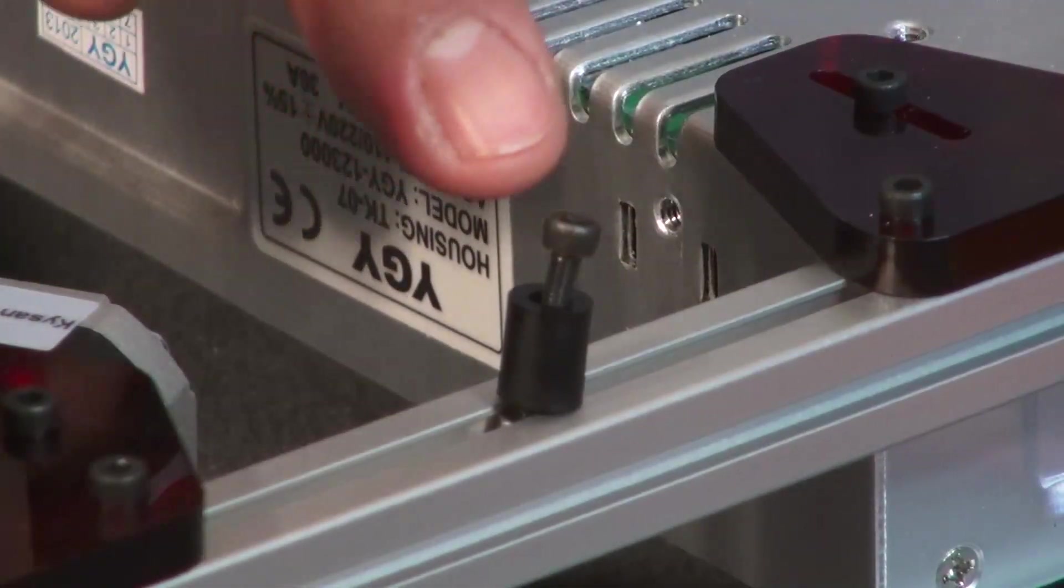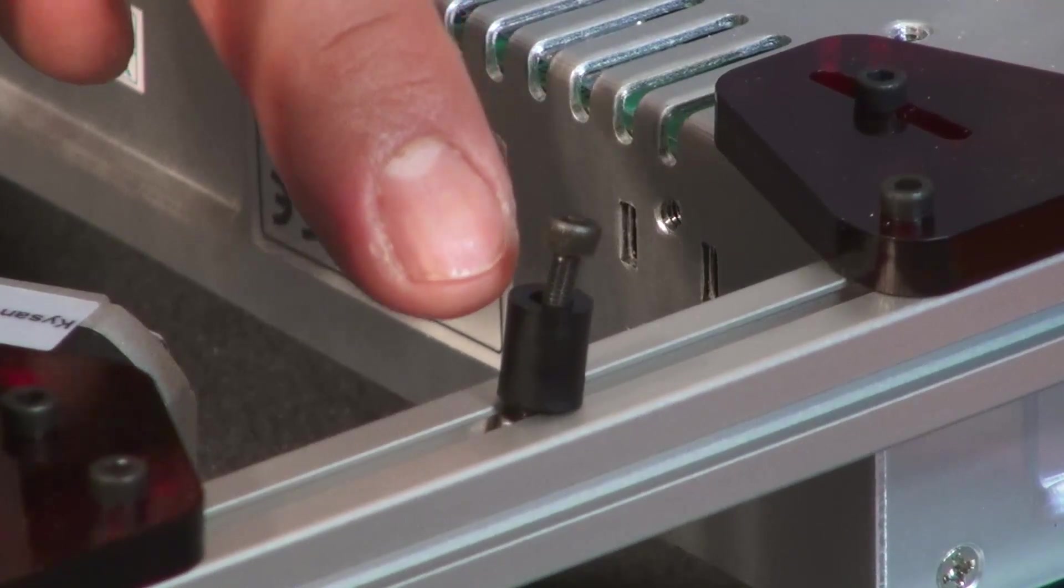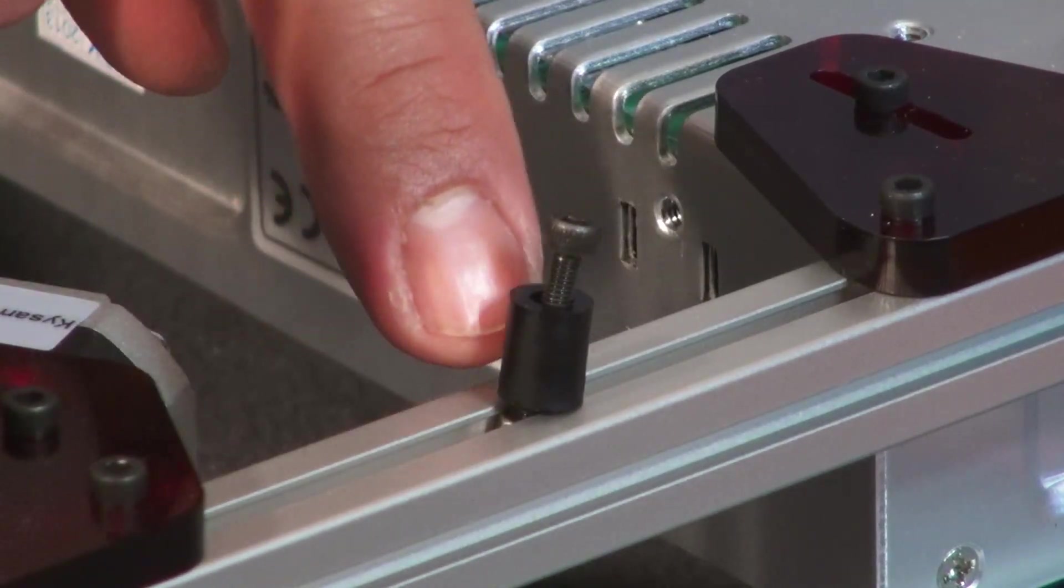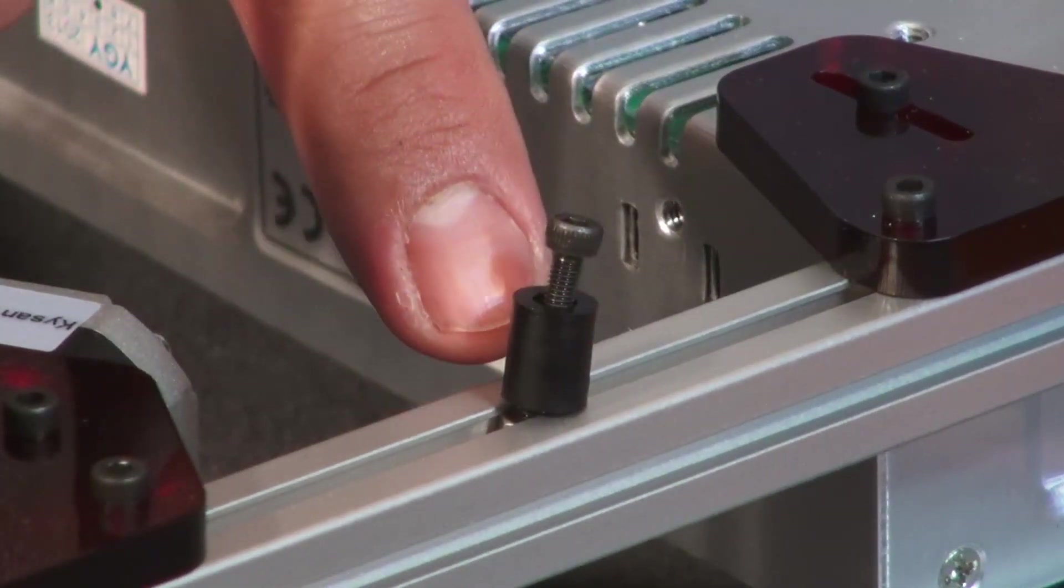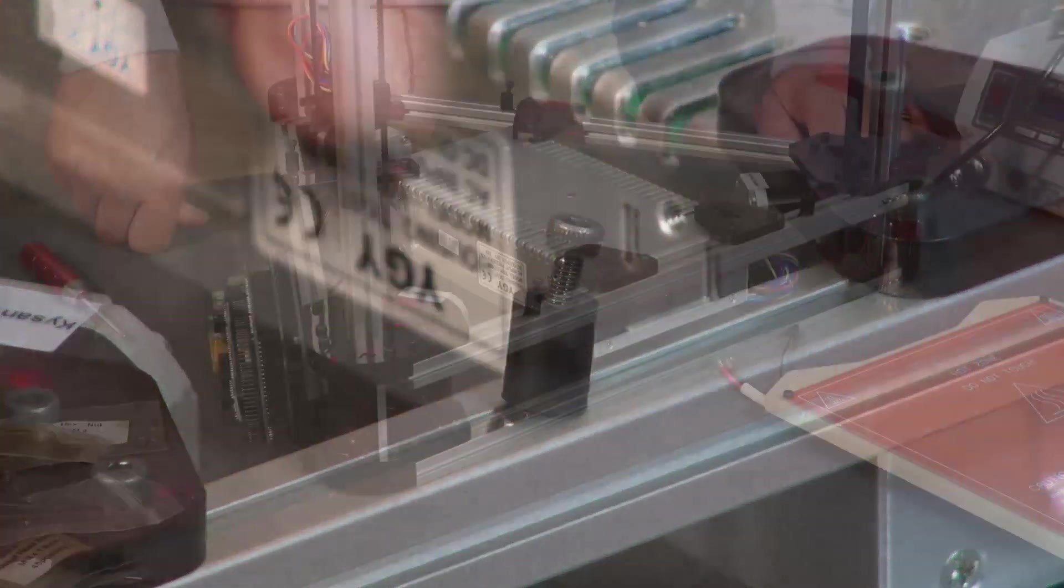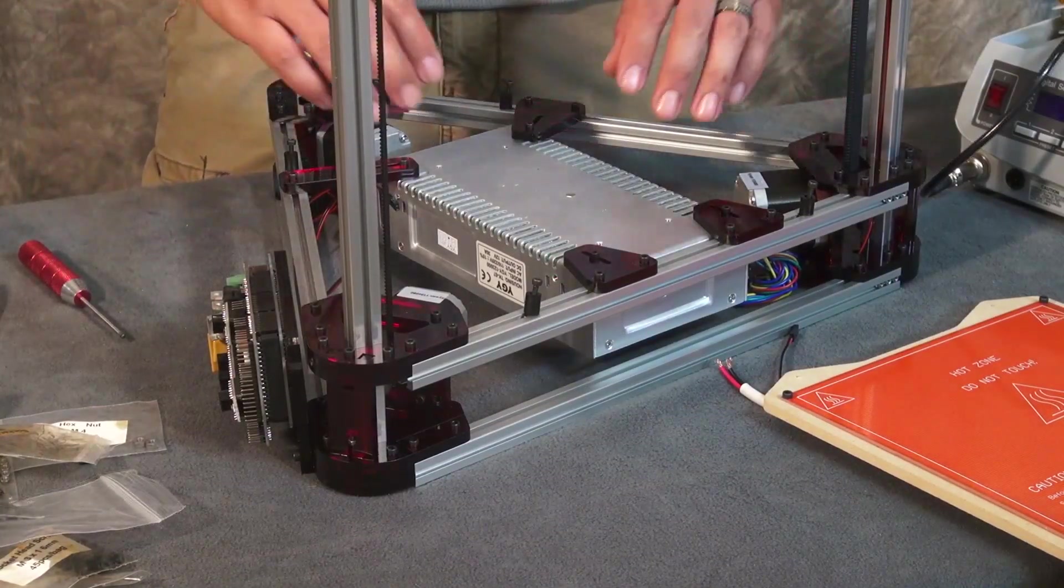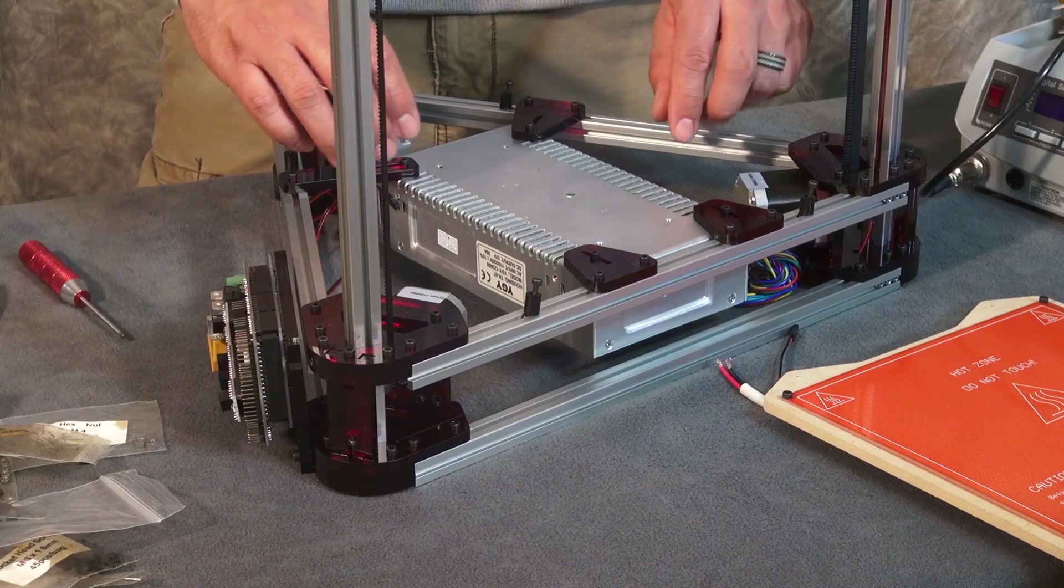For this step we're going to use four M3 by 20 millimeter bolts, four spacers, and you'll utilize the M3 nuts that we left on the bottom spacer earlier in the build. You may recall that we suggested you keep the bolts loose that are connected to your power supply in the frame.